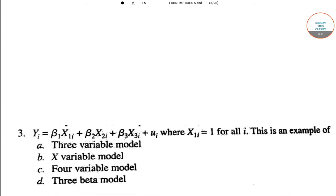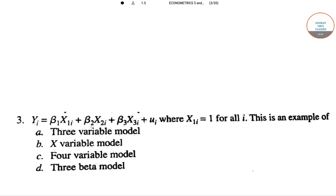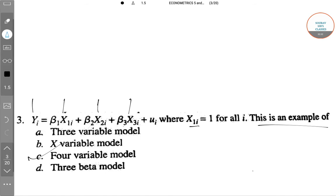Moving to the third question we have yi is a function of beta1 x1 beta2 x2 beta3 x3 ui. This is an example of which variable model? Basically we have to count all the x's and y to know the number of variables. So here we have three x and one y so it is a four variable model. So option c is the correct answer.